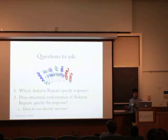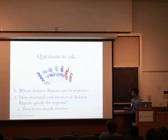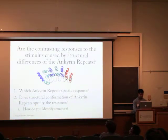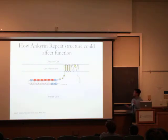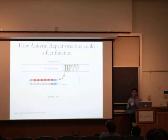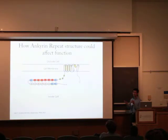Now that we have identified which ankyrin repeats specify the response to temperature, we hypothesize that it's probably the structural conformation of the ankyrin repeats that specifies this response. For example, if the ankyrin repeats' structural conformation changes differently — in human versus snake — it could somehow affect the conformation of the transmembrane protein and thus affect the function.